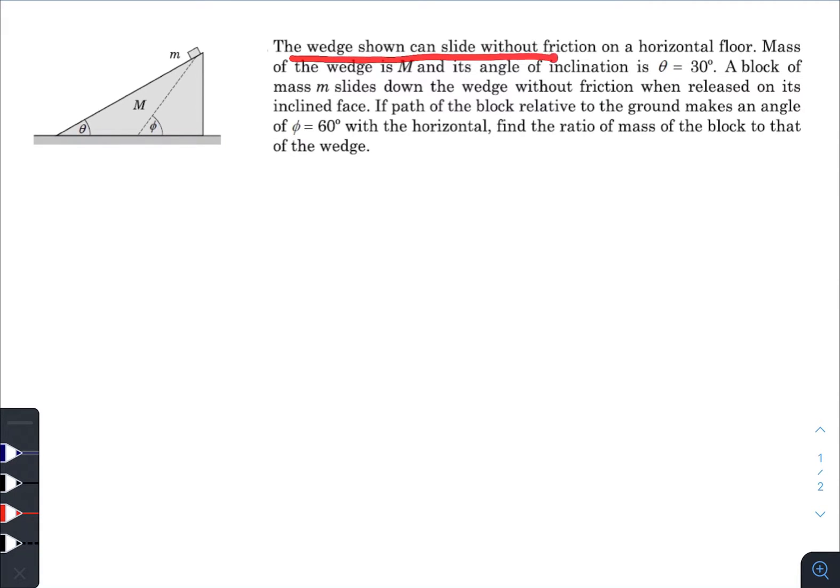The wedge shown can slide without friction on a horizontal floor. Mass of the wedge is M and its angle of inclination is theta. A block of mass m slides down the wedge without friction when released on its inclined face.